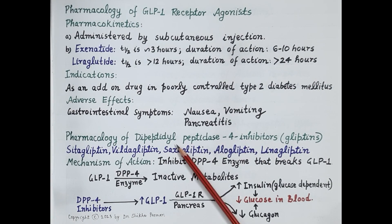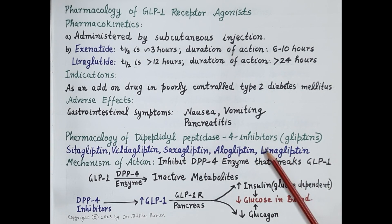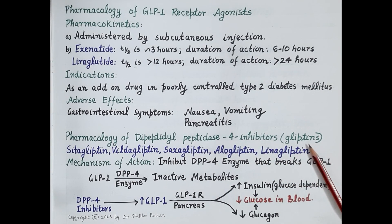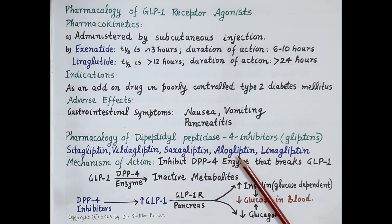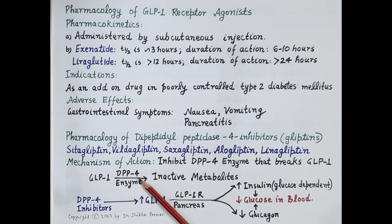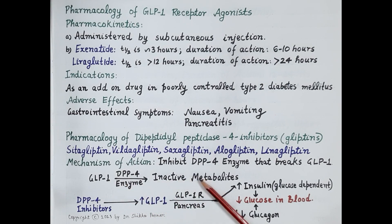Now let's discuss the pharmacology of dipeptidyl peptidase-4, that is DPP-4 inhibitors. These drugs are also called gliptins. They include drugs like sitagliptin, vildagliptin, saxagliptin, alogliptin, and linagliptin. As already discussed, the enzyme DPP-4 causes rapid breakdown of naturally or endogenously produced GLP-1 to inactive metabolites.